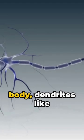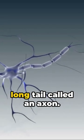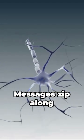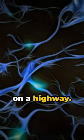A cell body, dendrites like tree branches, and a long tail called an axon. Messages zip along the axon like cars on a highway.